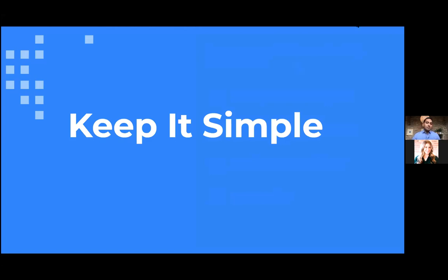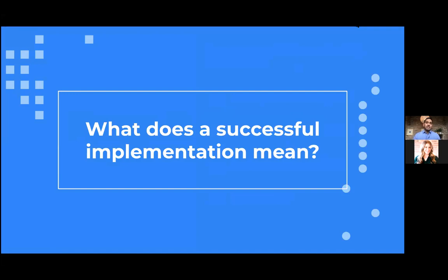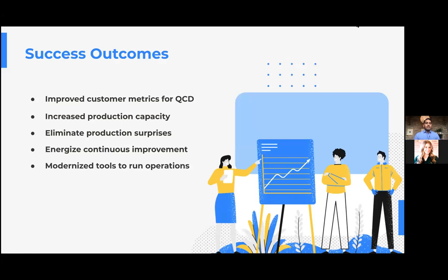Keeping everything simple starts with understanding what successful implementation really means. It starts with improved metrics for your customers across quality, cost, and delivery. Second is increased production capacity with existing resources, identifying hidden pockets of losses. Third is eliminating production surprises. Fourth is energizing your continuous improvement journey and having the entire team excited to talk about top problems and how to solve them. Finally, having modern tools for the entire team to run day-to-day operations — the better the tools, the easier things are to manage.